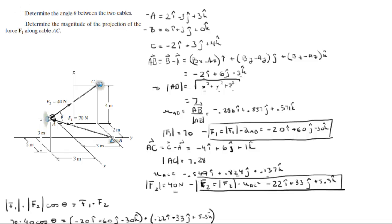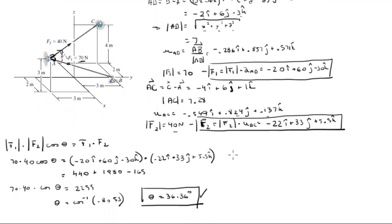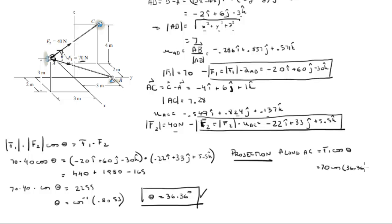Now they want you to find the projection of F1 along vector AC. This is very easy to find once you have the angle between them. The projection along AC is given by F1 times the cosine of beta, which is 70 times cosine of 36.36 degrees.